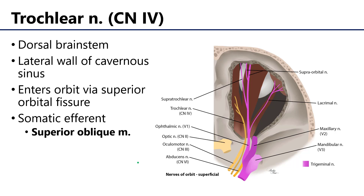Next up, we have the trochlear nerve or cranial nerve 4. The trochlear nerve is unique among all the cranial nerves in that it originates in the dorsal brainstem, whereas most others are ventral brainstem. It travels through the lateral wall of the cavernous sinus, and it enters the orbit via the superior orbital fissure, just like the oculomotor nerve did. It is somatic efferent to the superior oblique muscle.